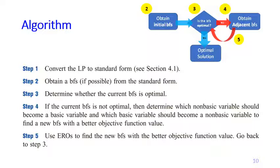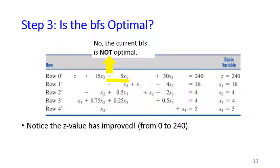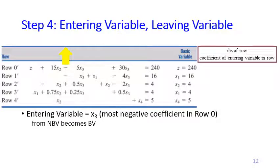Back at step three for this maximization problem: the BFS is not yet optimal because row zero still contains a variable with a negative coefficient — x3 with coefficient minus 5. However, the z value has improved from 0 to 240. In step four again, the entering variable is x3 since it has the most negative coefficient in row zero. For the leaving variable we perform the ratio test: right-hand side divided by the coefficient in the x3 column.